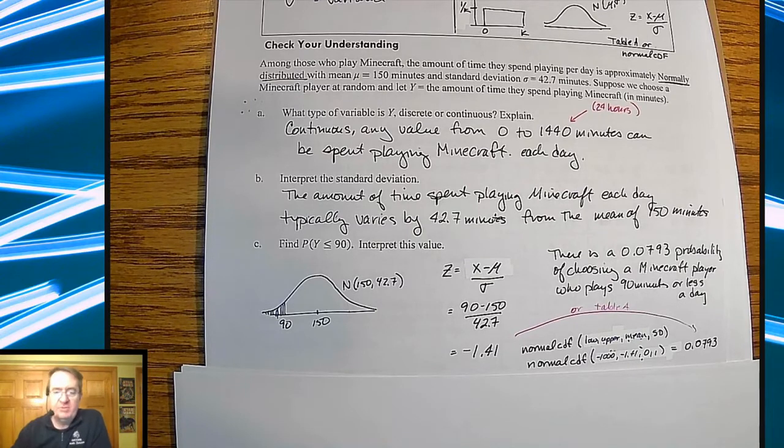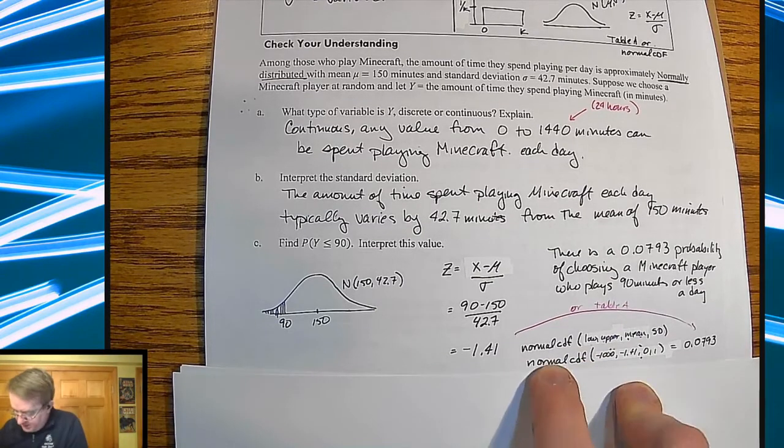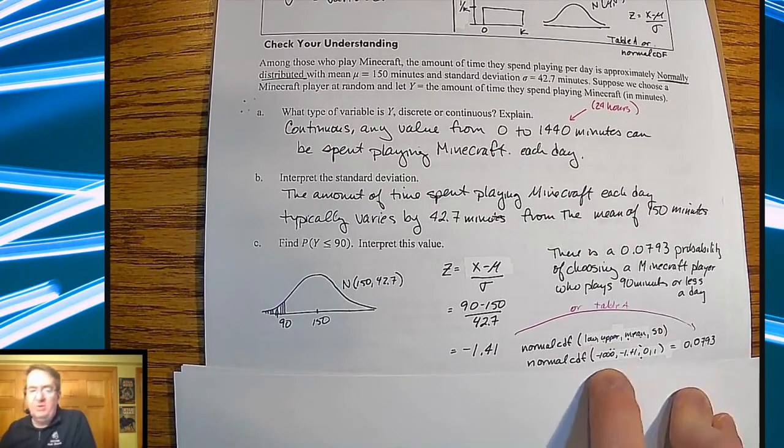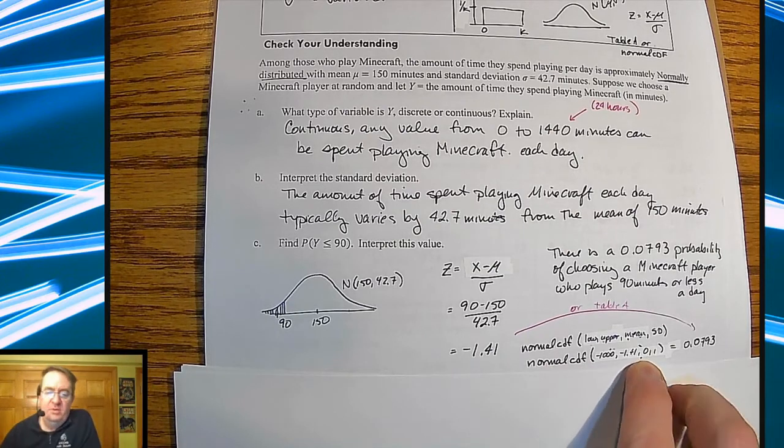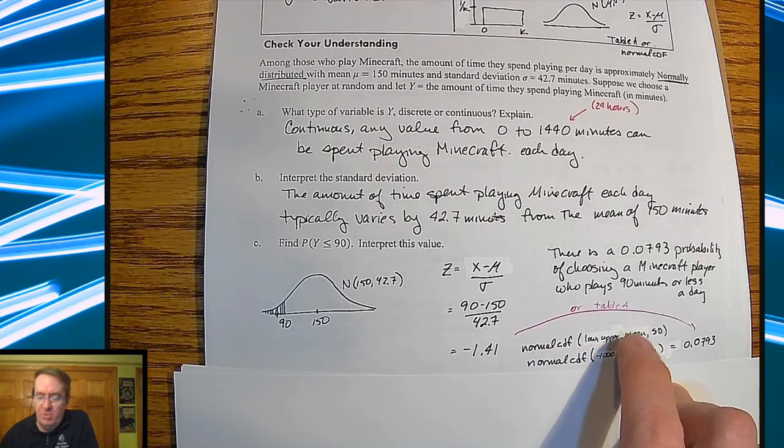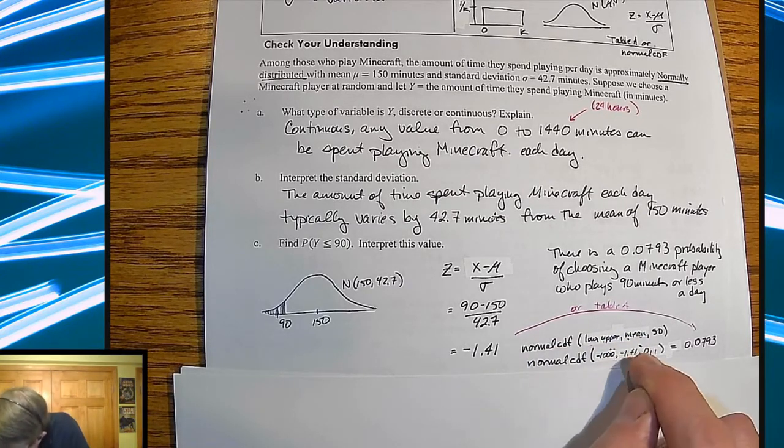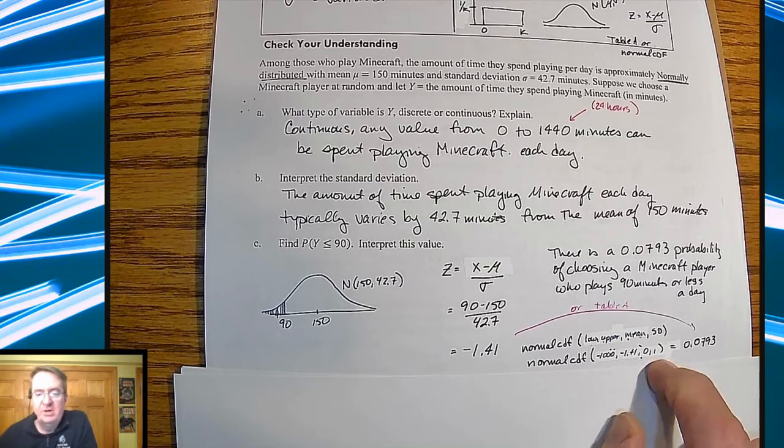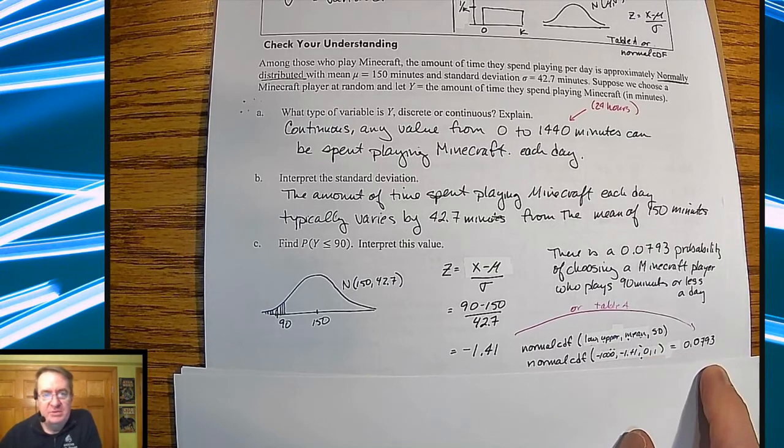Now, in terms of doing this, you've got two options. Everybody loves a calculator. Now remember, if you write it out, you need to write out the calculator command. And then you're going to have to go through and rewrite it so they know that you know that that's your lower value, your upper value, your mean, and standard deviation. You get an answer of 0.0793.